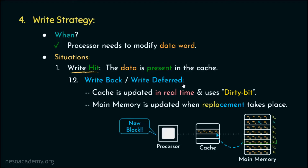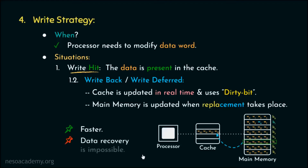When replacement occurs, the cache line is evicted. If the dirty bit for that line is set to 1, the update is propagated to main memory before the newly requested block is placed in the cache. Write back is much faster because main memory is accessed only during replacement. However, data recovery is impossible — if the cache fails, updated data cannot be recovered. So for write hit, the two strategies are write through and write back.